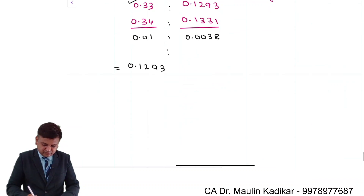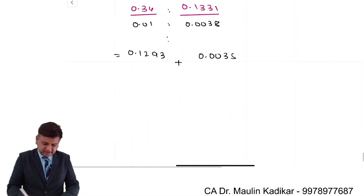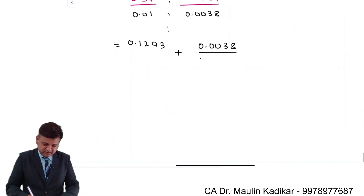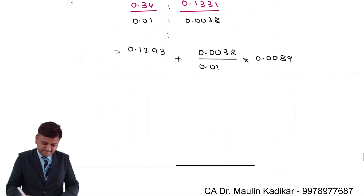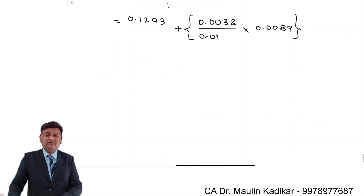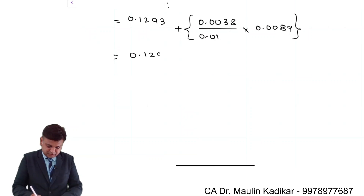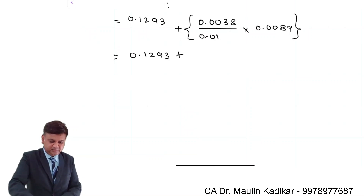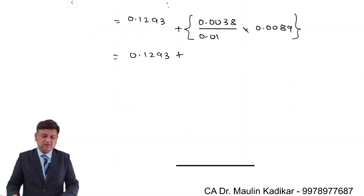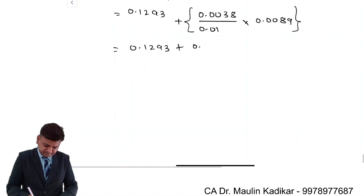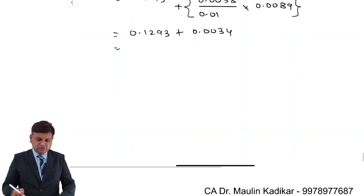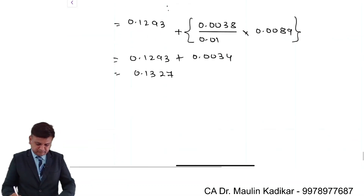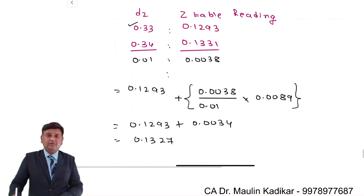So, 0.1293 plus 0.0038 divided by 0.01, multiplied by 0.0089. That is the way we will obtain the Z-table reading. So, 0.1293 plus 0.0038 into 0.0089 divided by 0.01, giving 0.0034. Then 0.0034 plus 0.1293 equals 0.1327. This is the Z-table reading of the D2 value.